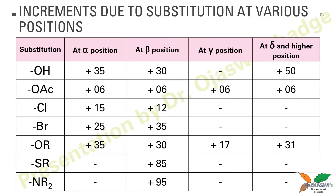These are some additional values which were not in the earlier video — for example, hydroxy substitution, halide substitution, alkoxy substitutions, and amino substitutions. When these substitutions are present at various positions like alpha, beta, gamma, delta and higher positions, they cause different degrees of increase in the lambda max of that particular structure.